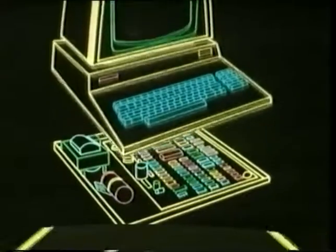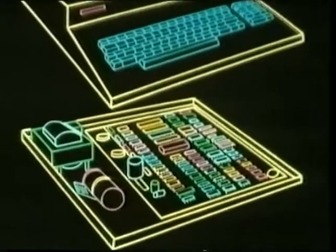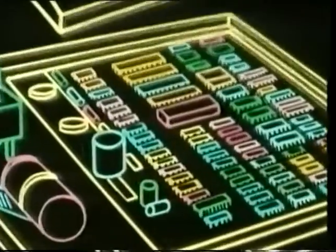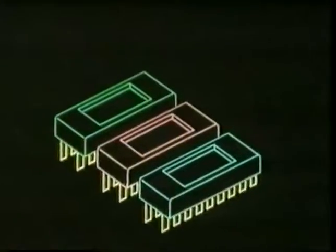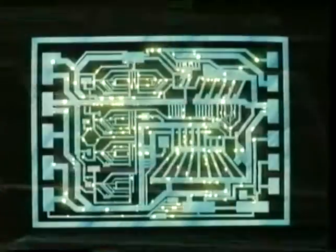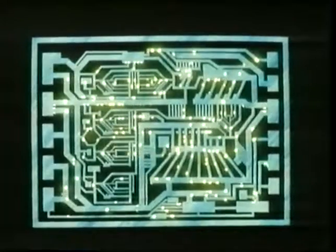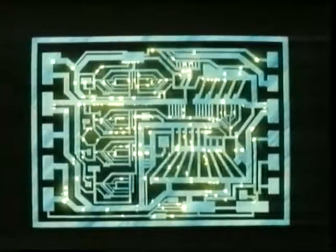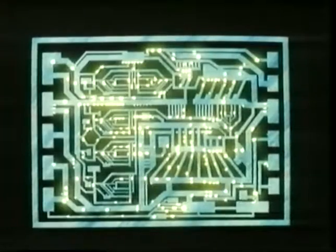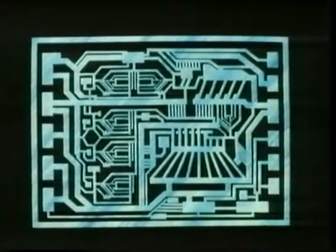If you lift the lid of a computer, you will see a circuit board into which a number of little boxes have been plugged. Each box contains a chip, which consists of thousands of microscopic electric circuits, each of which can be either on or off. This is the only language that the computer understands.